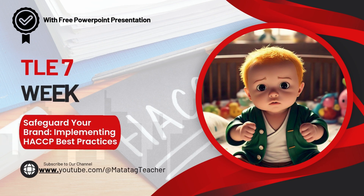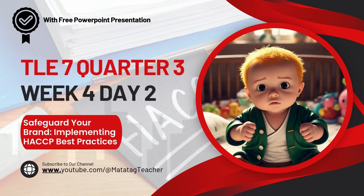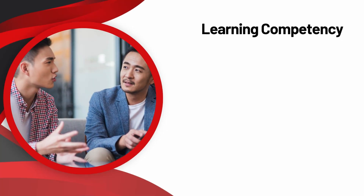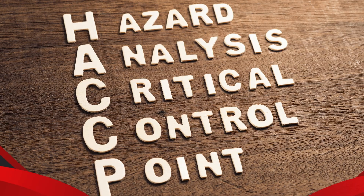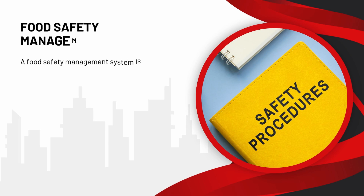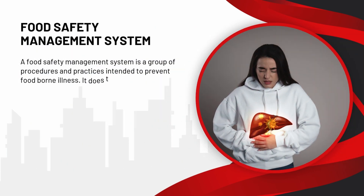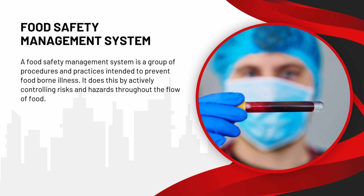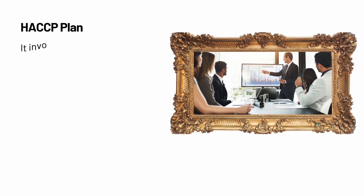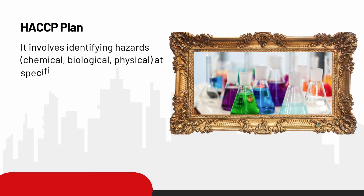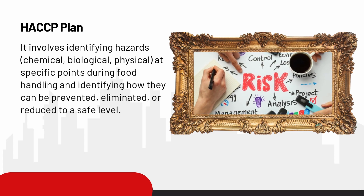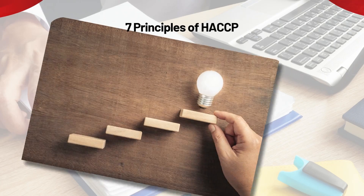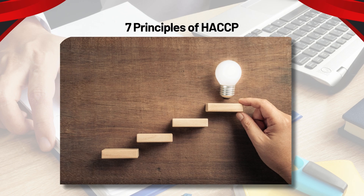Good day everyone. Welcome to Day 2 of our TLE 7, Quarter 3, Week 4. Learning Competency: Discuss the 7 Principles of HACCP and give an example of each. Hazard Analysis Critical Control Point, or HACCP, is a food safety management system — a group of procedures and practices intended to prevent foodborne illness by actively controlling risks and hazards throughout the flow of food. A HACCP plan involves identifying hazards — chemical, biological, and physical — at specific points during food handling, and identifying how they can be prevented, eliminated, or reduced to a safe level.